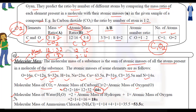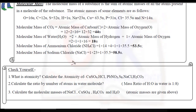Next, molecular mass of water H2O: 2 × atomic mass of hydrogen + 1 × atomic mass of oxygen = 2 + 16 = 18 U. Next, molecular mass of ammonium chloride NH4Cl: 1 × 14 (nitrogen) + 4 × 1 (hydrogen) + 1 × 35.5 (chlorine) = 14 + 4 + 35.5 = 53.5 U. This is how we calculate molecular mass.